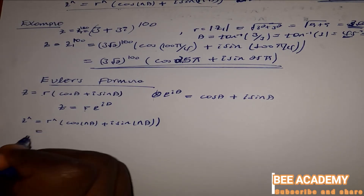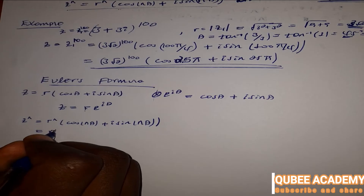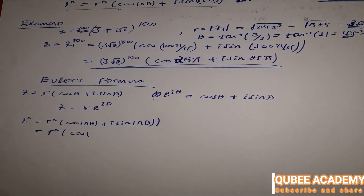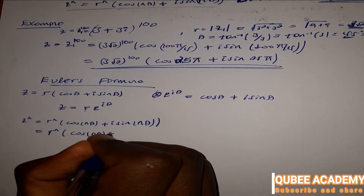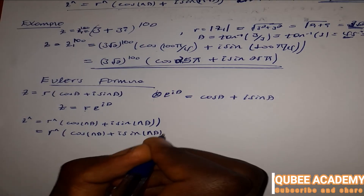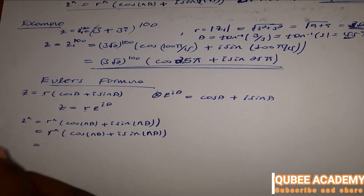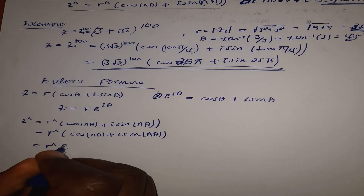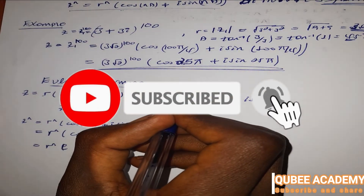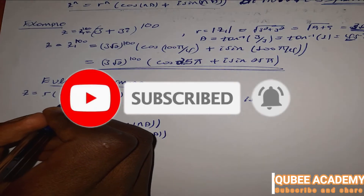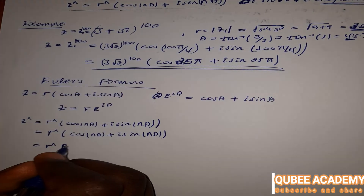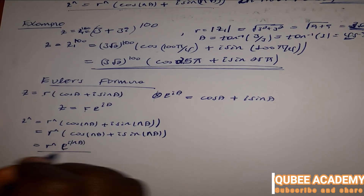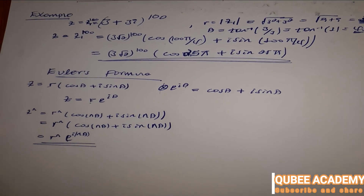Using Euler's formula, z to the power of n is equal to r to the power of n, times e to the power of i n theta. This gives the exponential form of De Moivre's theorem.